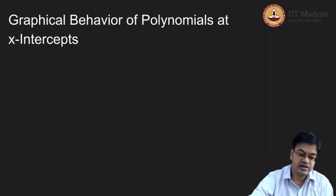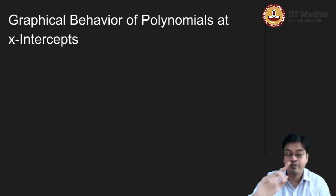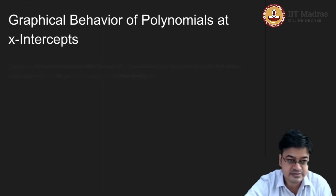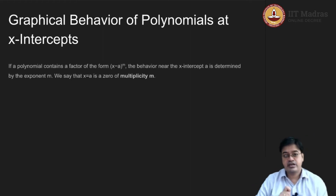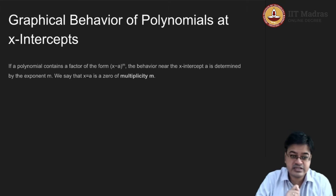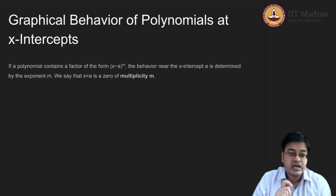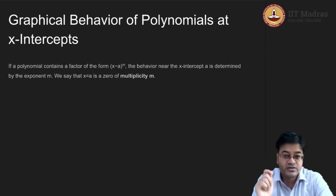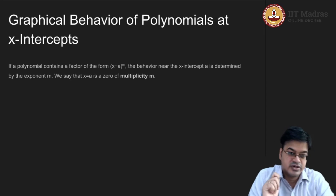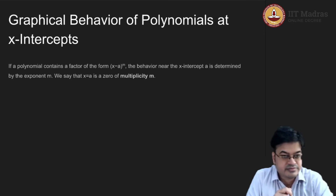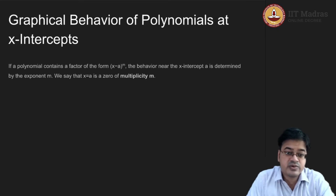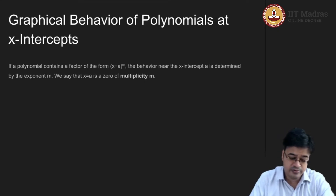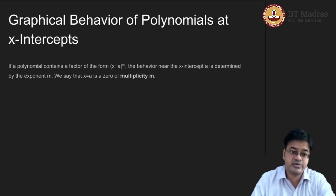Let us look at the graphical behavior of polynomials at x-intercepts. If the given polynomial has a factor of the form (x minus a) raised to m, this m is called the multiplicity of the polynomial. We say x equals a is a zero of polynomial f with multiplicity m.